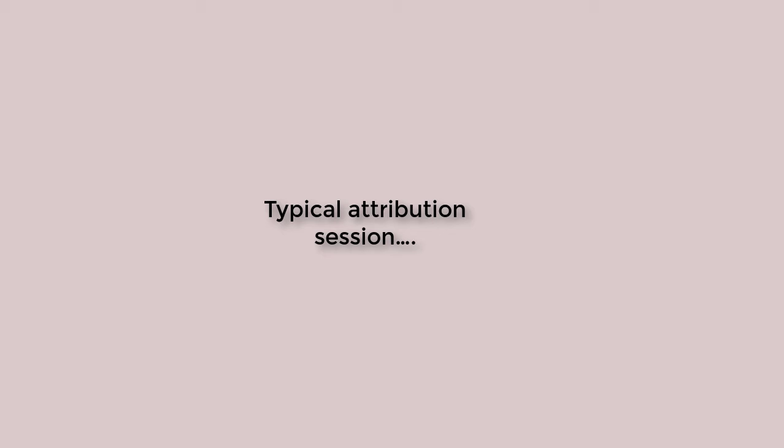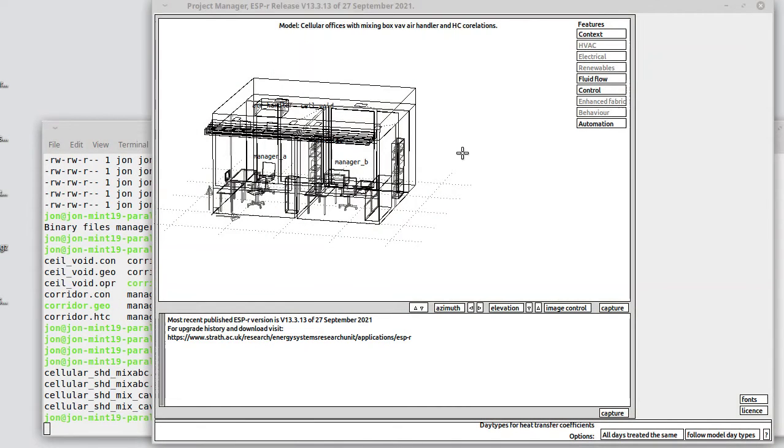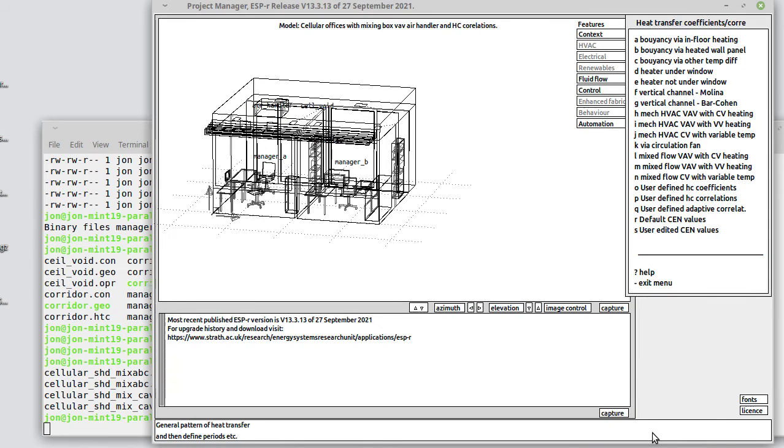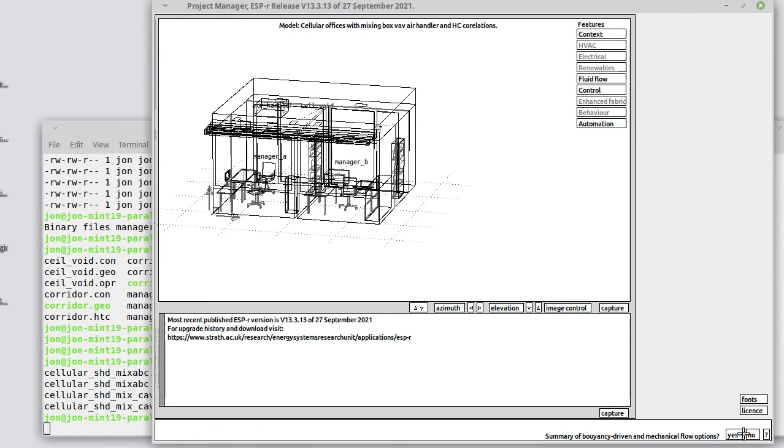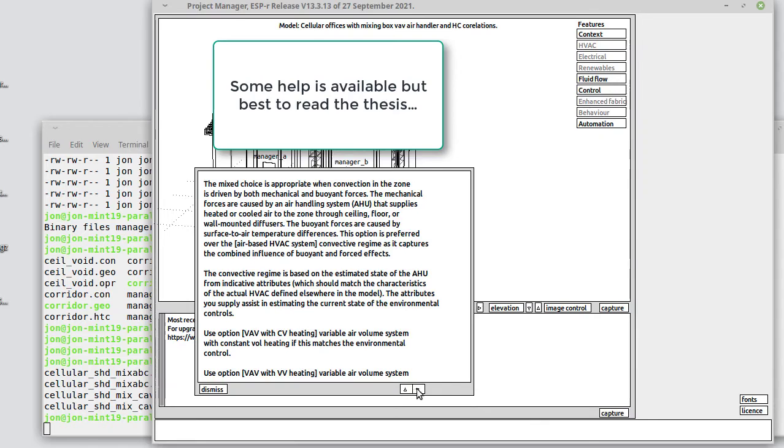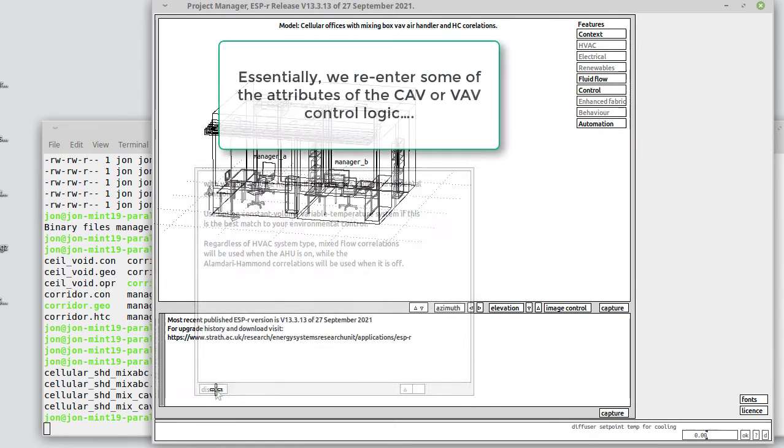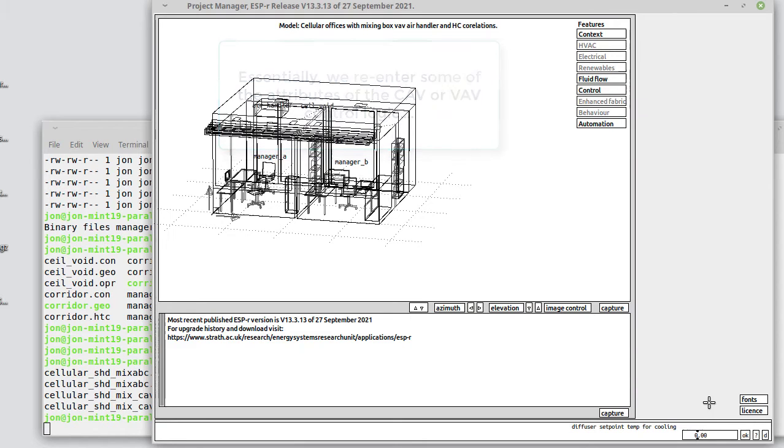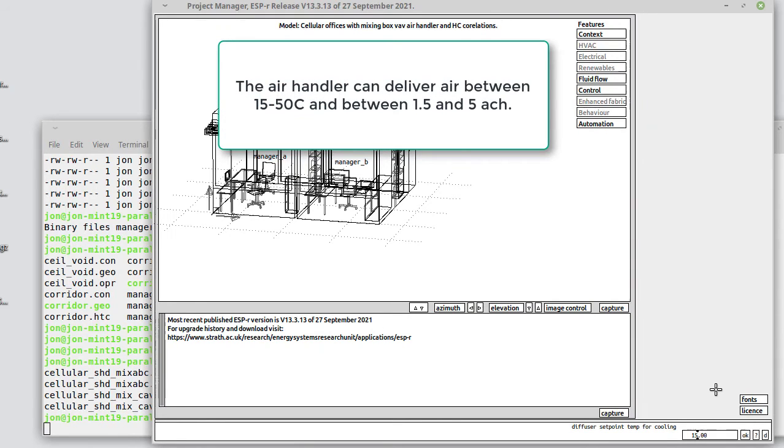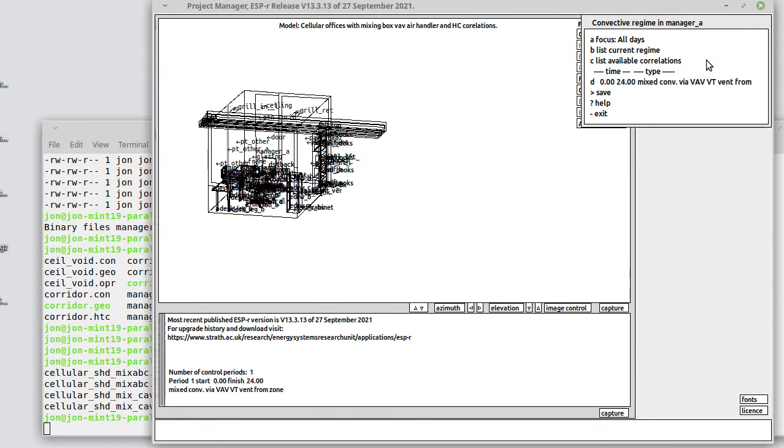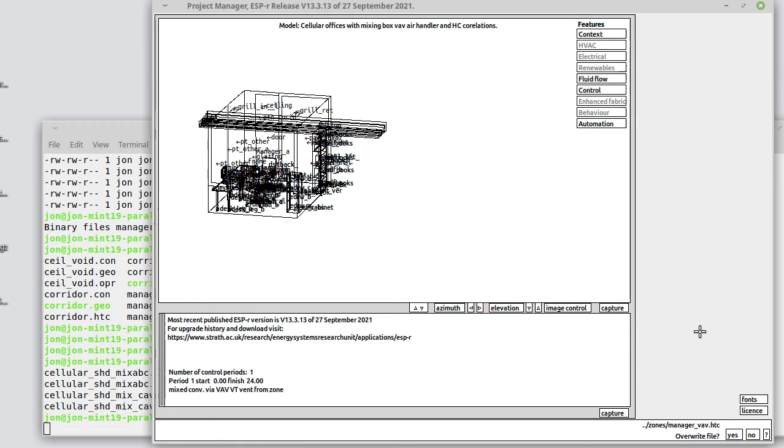Let's look at a typical attribution session for heat transfer coefficients. We'll take a simple case where all days are treated the same and then we are going to pick from the list of different mixed flow options. Let's choose the variable air volume one. There is information available that you might want to read but best to go and look in the thesis. Essentially, we're taking information described elsewhere in the model and reiterating it for the heat transfer coefficient method to use. We've got an air handler delivering temperatures within a certain range and within a certain air change rate and we're putting that information in so that they can assess conditions.